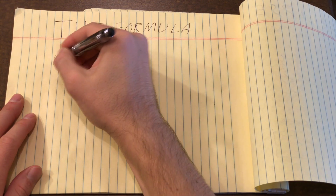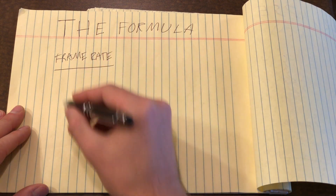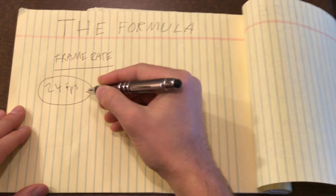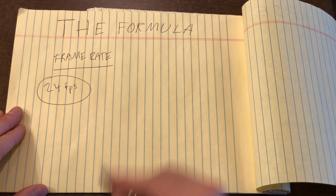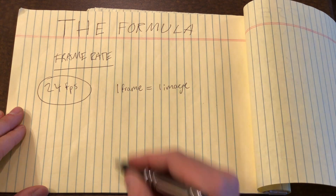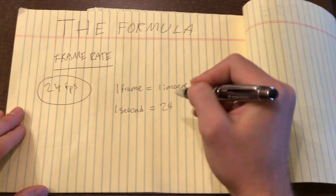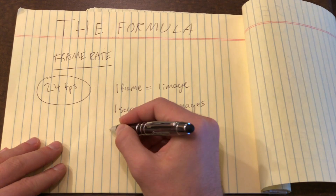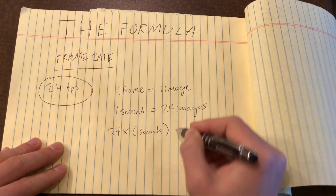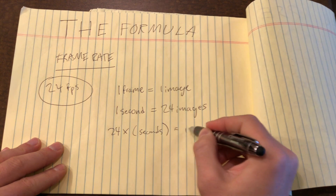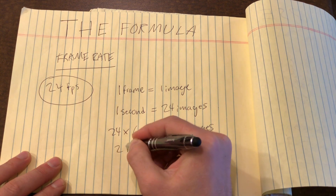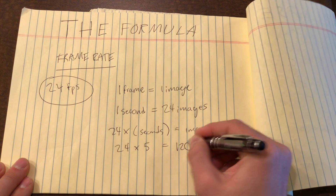Before you set up your equipment and start shooting a hyperlapse, we need to talk about the formula to calculate how many images you need to shoot. First, we need to talk about frame rate. Most films are shot at 24 frames per second, and that is the example I'm going to use. A good rule of thumb is every one frame equals one image, which means one second equals 24 images. So the formula is 24 times however many seconds you want, giving you how many images you need to take.